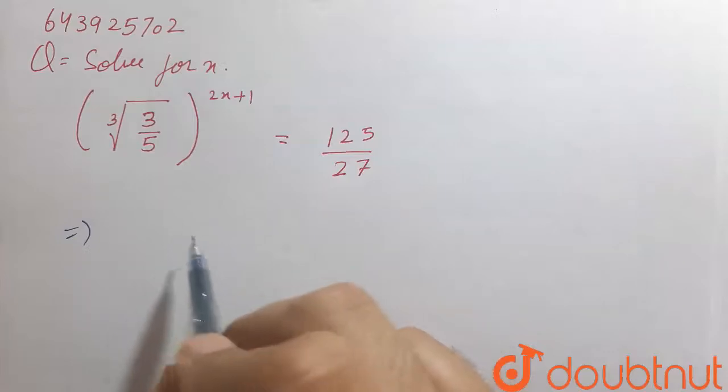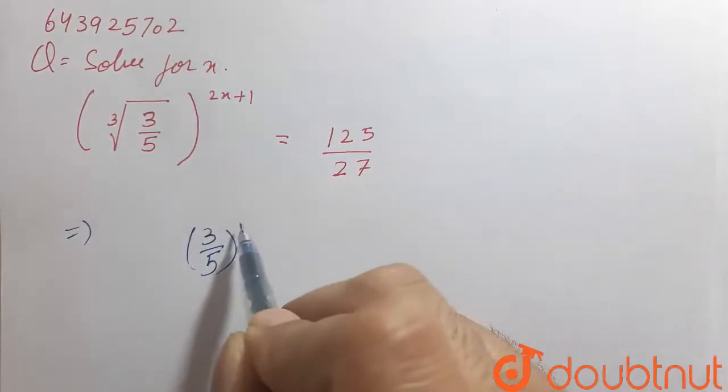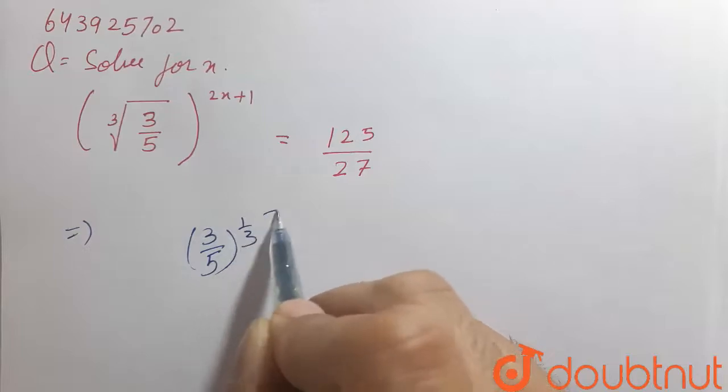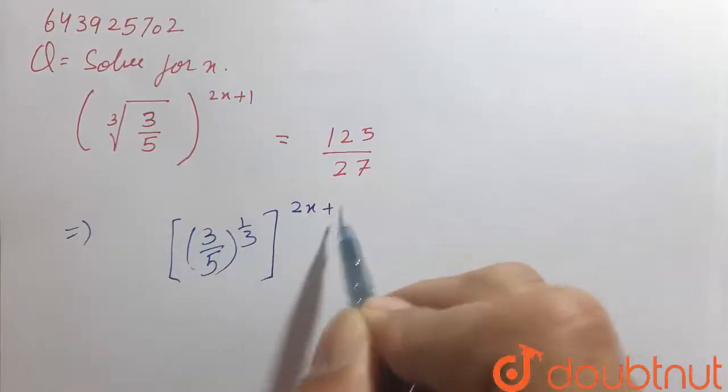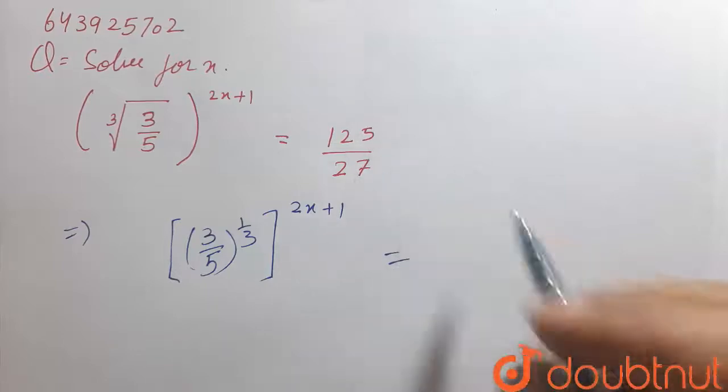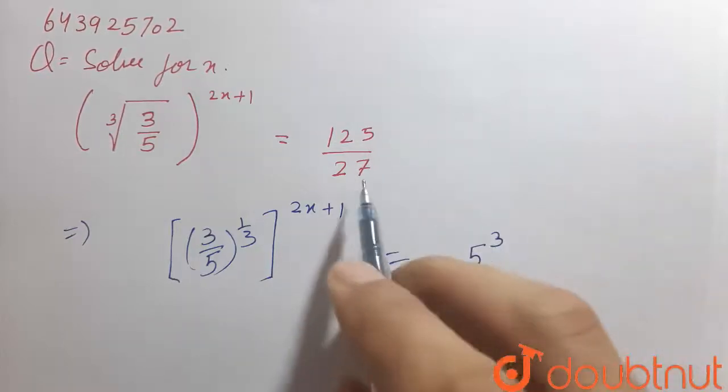So here it can be written as (3/5) raised to the power 1/3, whole raised to the power 2x plus 1, which equals... here 125 can be written as 5 cubed, and 27 can be written as 3 cubed.